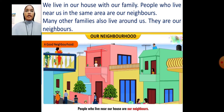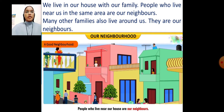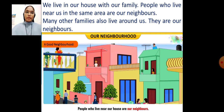We live in our house with our family. People who live near us in the same area are our neighbors. Many other families also live around us. They are our neighbors. Those who are living around us are our neighbors.